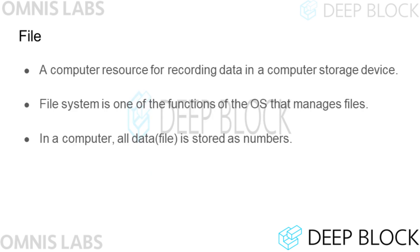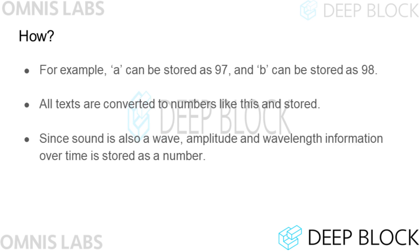In a computer, data is stored in a named state on non-volatile storage — this location is what we call a file. Operating systems such as Ubuntu and Windows include software called a File System that manages these files, and the File System manages files in the form of numeric data. For example, the character A in a text file is stored as the number 97, and B is stored as 98. All text is converted to numbers on the computer and stored. Similarly, since voice data is wave data that can be expressed numerically, amplitude and wavelength information according to time are stored as numbers.